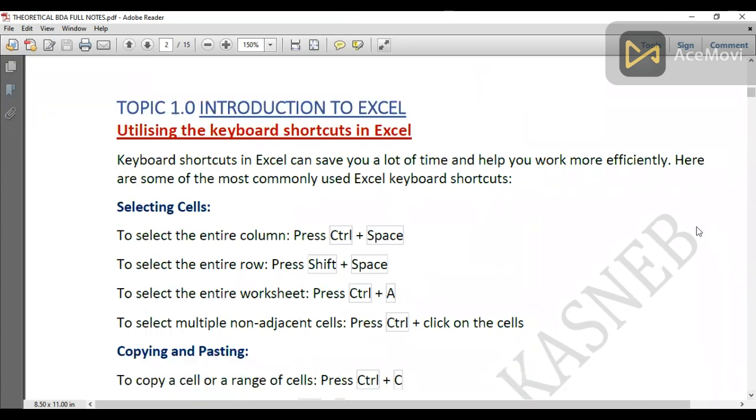We'll start with Introduction to Excel, utilizing Excel keyboard shortcuts. Keyboard shortcuts in Excel can save a lot of time and help you work more efficiently. We've highlighted the commonly used ones. When selecting cells: to select the entire column press Ctrl + Space, to select the entire row press Shift + Space, the entire worksheet is Ctrl + A.